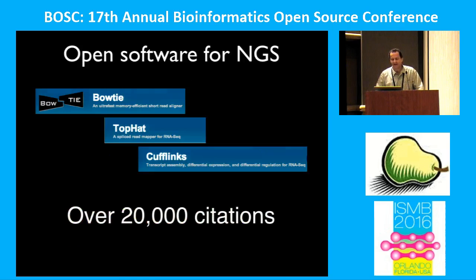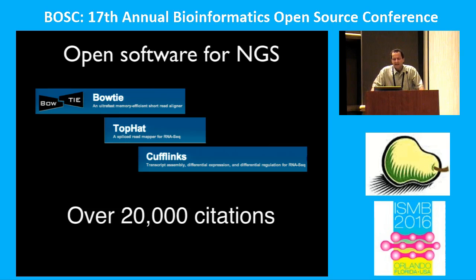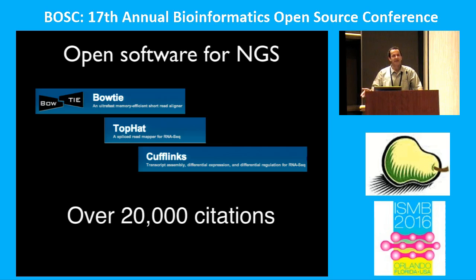In more recent years, we've been developing software for next-generation sequencing data, starting in 2008 with the Bowtie program, followed soon by TopHat and CuffLinks. Bowtie does alignment of reads to a genome very efficiently. TopHat was designed to align RNA-seq reads to a genome where you need to do a spliced alignment. CuffLinks does assembly of the alignments into transcripts, quantifies the transcripts, and does differential expression analysis. This is a very common set of tasks done by thousands of labs around the world pretty much every day.